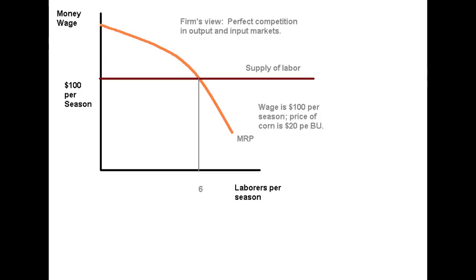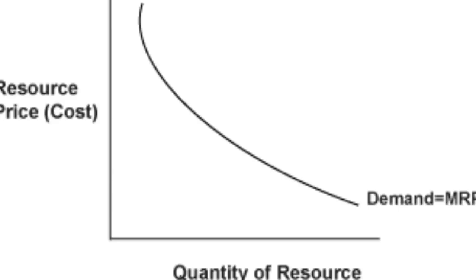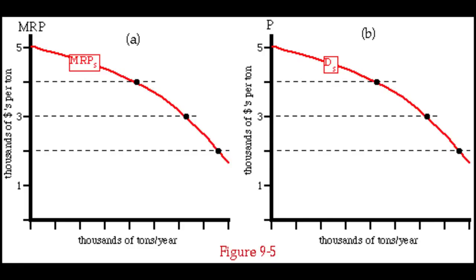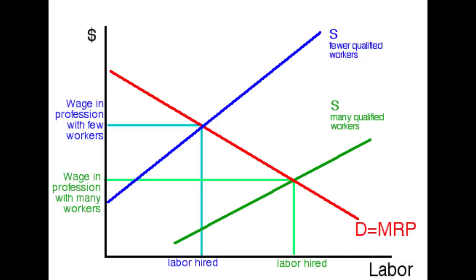The marginal revenue product is equal to the wage rate. If the marginal revenue brought by the worker is less than the wage rate, then there is no need to employ.